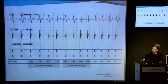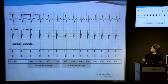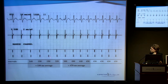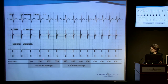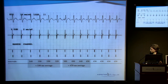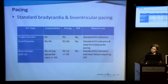But how does the ICD know whether the patient's in VT? It's all based on calculations. The ICD calculates the RR interval — essentially the heart rate — and this is called the cycle length, measured in milliseconds. The marker channel shows VS (V-sense), meaning it's sensing a ventricular complex, and it calculates the interval between each complex so that it knows the heart rate.